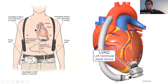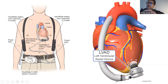You have the pump and a continuous lead known as the driveline, which is connected to an outside controller. The controller is connected to two batteries that provide internal power for both the controller and the pump.